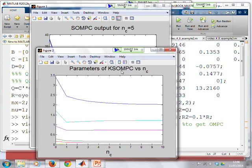If we look at the KSOMPC parameters, you can see now, for this example, they take quite a while to converge. But by the time you get to NC equals 10, the parameters have just about converged. And if you looked, you'd find they're converging to KOMPC.